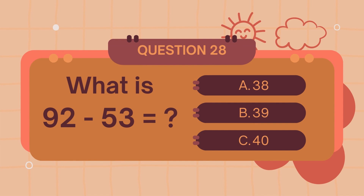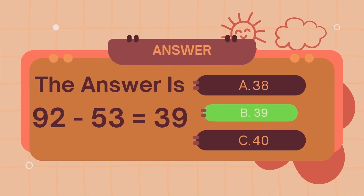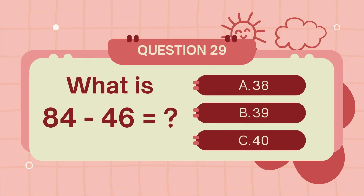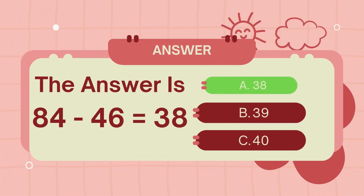What is 92 minus 53? The answer is 39. What is 84 minus 46? The answer is 38.